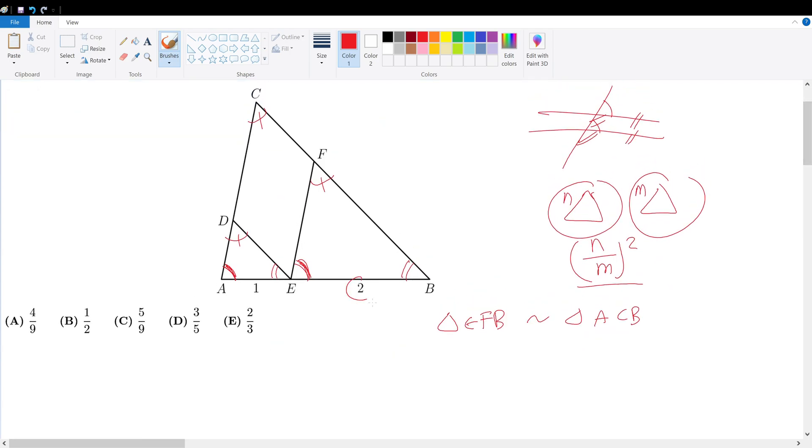So that means this triangle EFB compared to triangle ACB must give 2 over 3. Now if we square it, we get the ratio of the areas. So if we square this, that gives 4 over 9. In other words, this is 4 over 9 of ABC. Let's call the area of ABC to be X. So that's 4 over 9X.